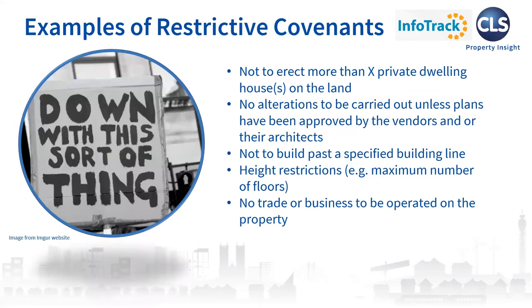Typical examples of restrictive covenants commonly seen on title deeds might include limits on building a certain volume of residential properties on land, or even completely prohibiting redevelopment. There may be a restrictive covenant that requires no alterations to be carried out unless plans have been approved by the vendors or their architects — and this may apply beyond the bricks and mortar, as requirements to seek approval on pruning or pollarding trees are not uncommon, even if the tree has no TPO associated with it. There may be a requirement not to build past a specific building line, height restrictions, a maximum number of floors, or that no trade or business is to be operated on the property, or a prohibition of specific types of trade.